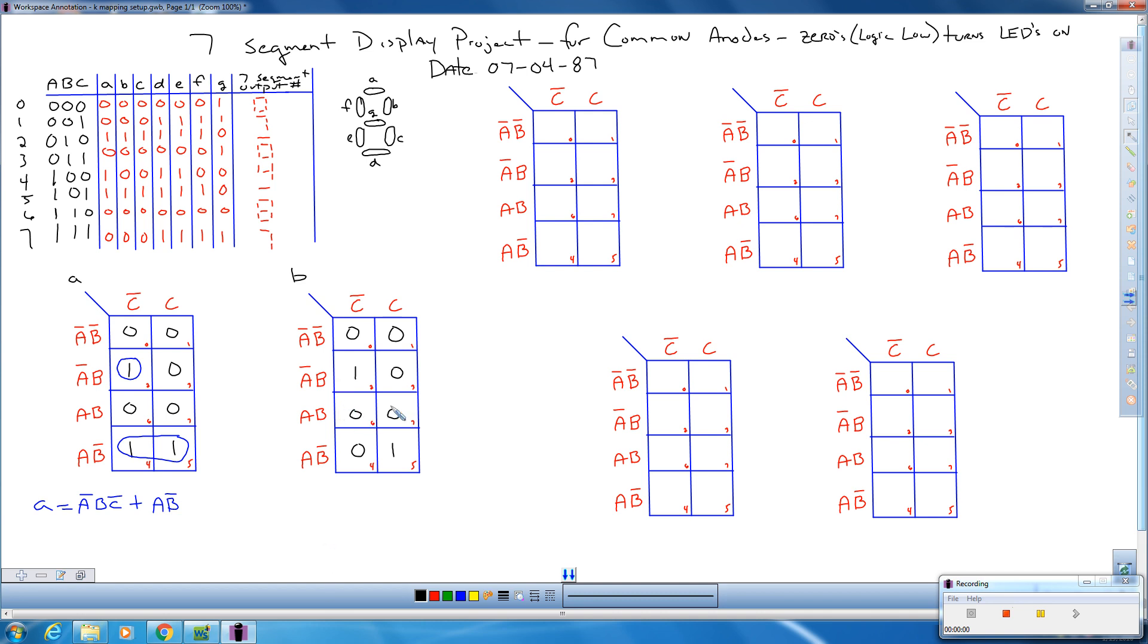Alright, doesn't look like we have anything that's going to be nice and short and simple here. This guy's a solo 1, this guy's a solo 1. So segment B is going to be A bar, B, C bar, which we have over here, or A, B bar, C. So these guys are solo, there's really no simplifying segment B down.